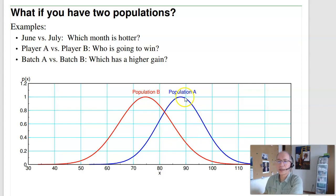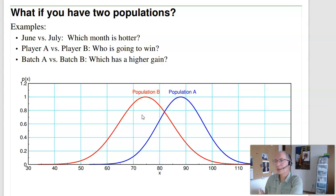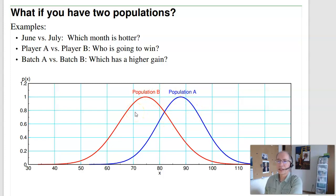If I have two players playing Hungry Hungry Hippo, who's going to win the next game? If I have two batches of transistors, which one has the higher gain? Essentially from the central limit theorem, I've got two populations — they both have a mean and a standard deviation. I want to know one of two things: if I play one more game, what's the probability that A will be bigger than B? Or, in an infinite game series, who would win — who has the actual higher average?